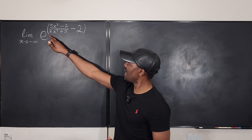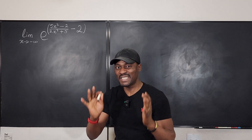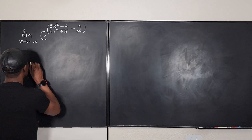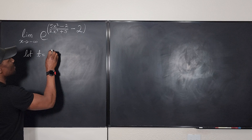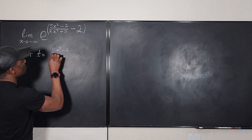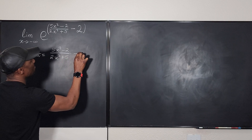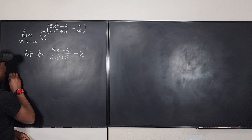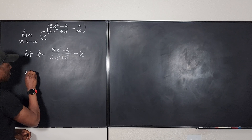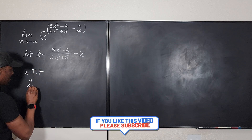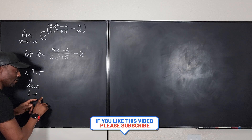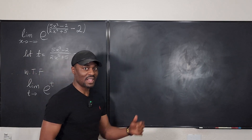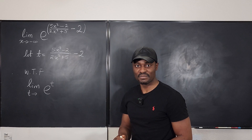I'm going to represent everything inside this parenthesis as t and then rewrite it in a very simple way. I'm going to let t be equal to 5x² minus 2 over 2x² plus 5, minus 2. Then I'm going to rewrite this problem and say: therefore, I want to find the limit as t goes to something — I don't know what that thing is — of e to the t. Isn't this a lot simpler than the crazy expression you have on top?